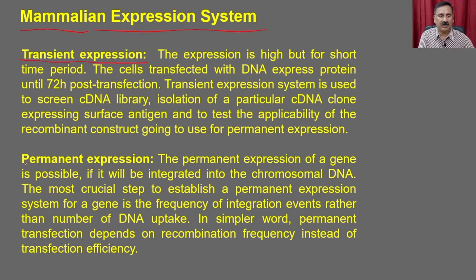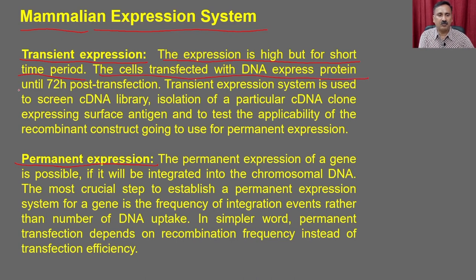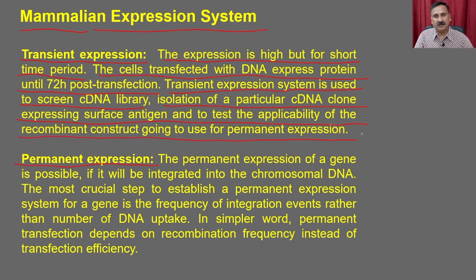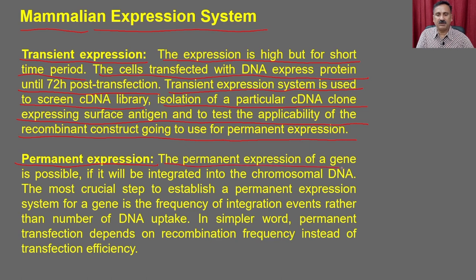In the mammalian expression system, you have two options: transient expression or permanent expression. In transient expression, the expression is high but for a short period of time, because the vector does not integrate the DNA into the genome — it remains as extrachromosomal DNA. Cells transfected with DNA express the protein for up to 72 hours post-transfection. Transient expression is used for screening cDNA libraries, isolation of a particular cDNA clone expressing a surface antigen, and to test the applicability of the recombinant construct.